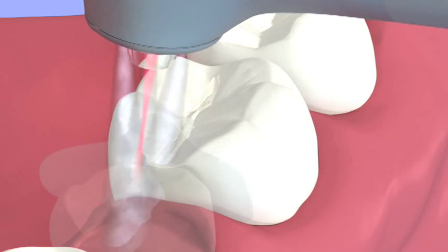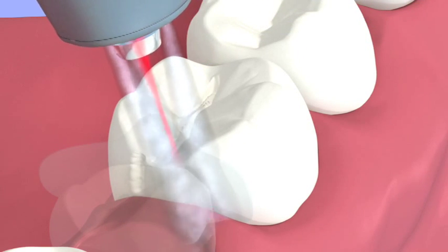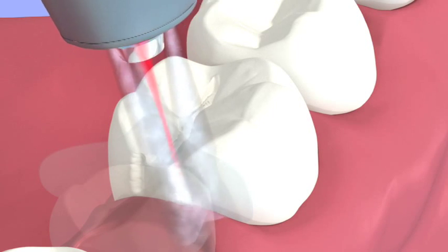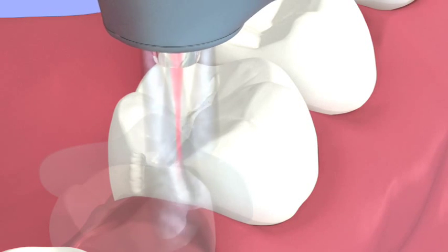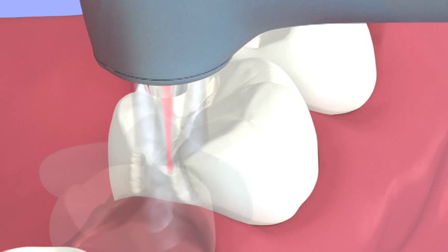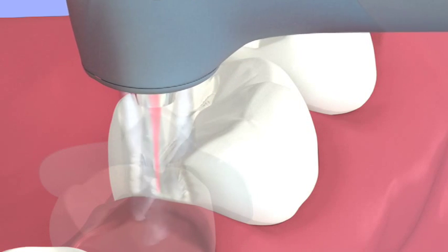To prepare the interproximal surface, start at the marginal ridge until you clear the contact with the adjacent tooth and remove the decay. Do not use a pendulum swinging motion like with the drill. Use a side-to-side motion from the buccal to lingual surface, moving in a straight line across and down for this step of the preparation.